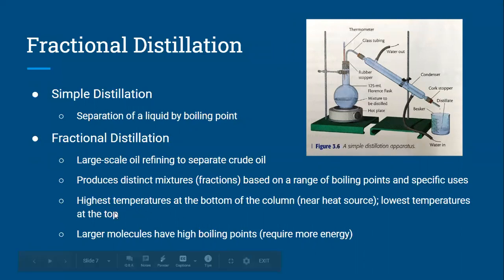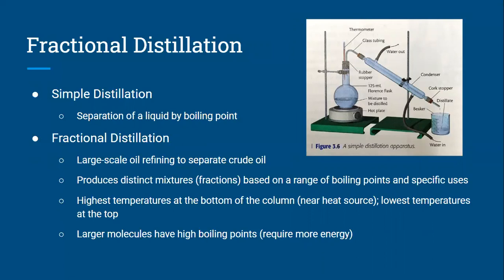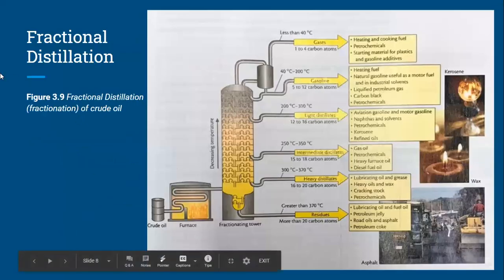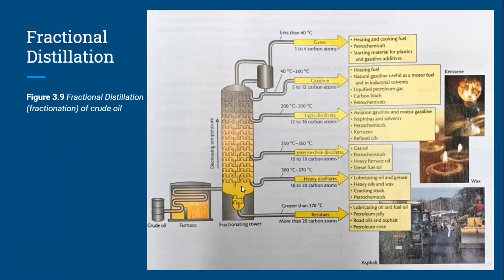In the fractional column, you'll notice that mixtures with the highest boiling points are at the bottom of the column, nearest to the heat source, meaning they need the most heat to boil. The lowest boiling point fractions, which need just a little heat and turn to gas first, are found at the top of the column. In figure 3.9, the crude oil is sent through a pipe in a furnace, heats up, and enters the fractioning tower. Sections that boil most easily, with the shortest carbon chains, boil immediately, turn to gas, and rise to the top. These have one to four carbon atoms and are gases.